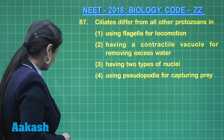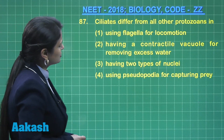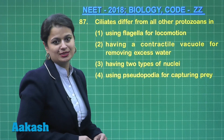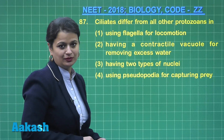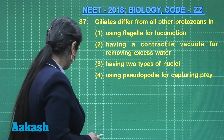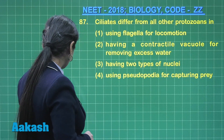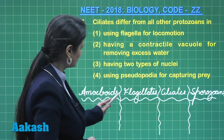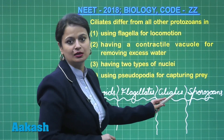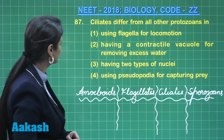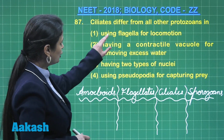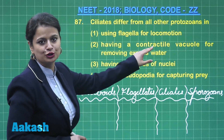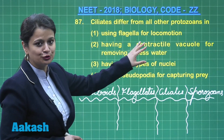Moving to question number 87: how is Ciliata different from all other protozoans? There are four groups under protozoans: amoeboids, flagellates, ciliates, and sporozoans. Looking at the first option — using flagella for locomotion — no, ciliates don't use flagella.